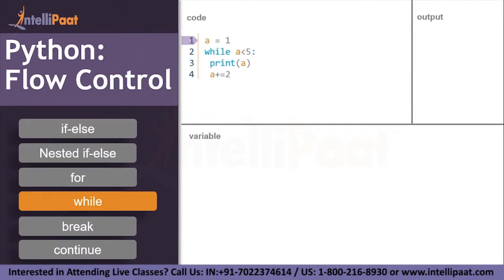Let's understand this with an example. Setting a equal to one. While a is less than five: is a equal to one less than five? Yes, condition is true. Then print the value of a.